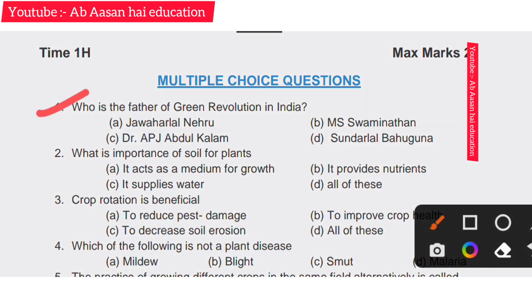First question: who is the father of the Green Revolution in India? The answer is part B — M.S. Swaminathan.